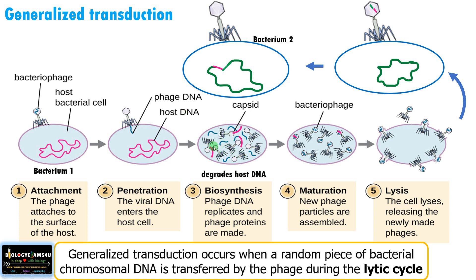By chance, any fragment of bacterium one may get transferred to bacterium two. That is why this is called generalized transduction — any fragment of bacterium one may get transferred to the next bacterium.